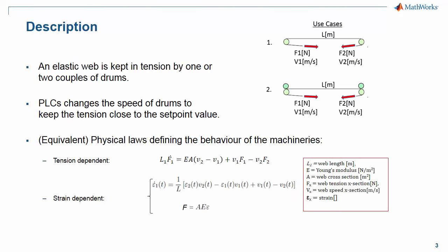The aspect we want to focus on is the tension between one or two couples of rollers, as you see from the image here. The PLC commands change the speed of drums to keep the tension of the film close to the setpoint value.